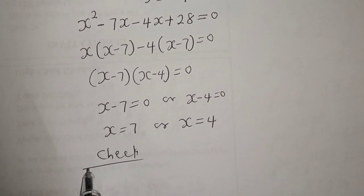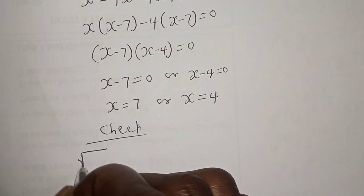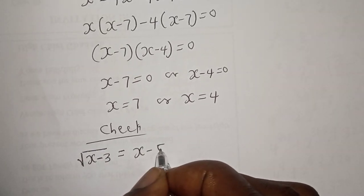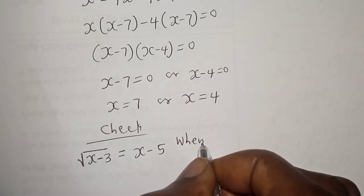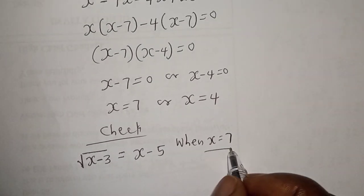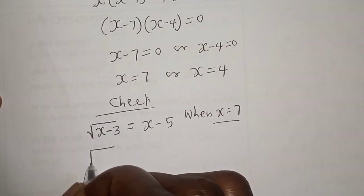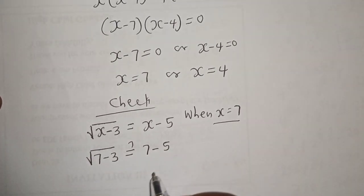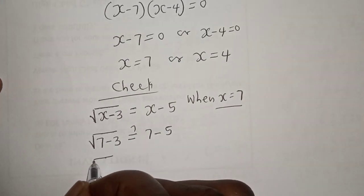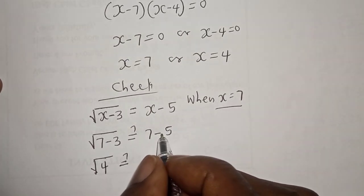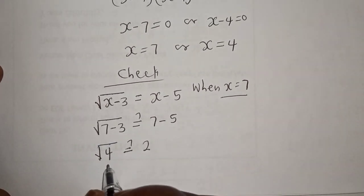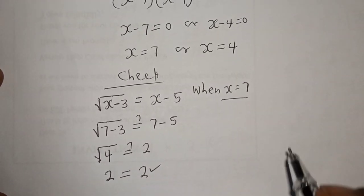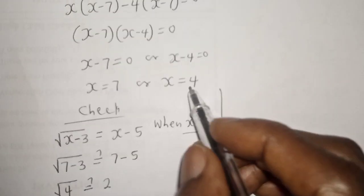We check using the original equation: square root of S minus 3 is equal to S minus 5. When S is equal to 7: square root of 7 minus 3 must equal 7 minus 5. That is square root of 4 must equal 2. Since square root of 4 is 2, this equals 2, which satisfies the given equation.